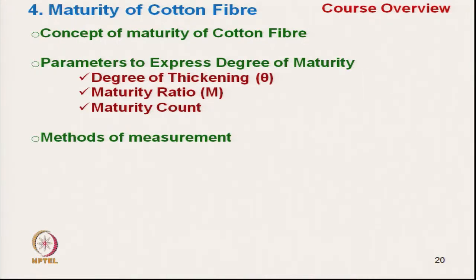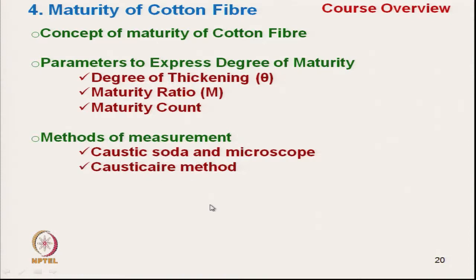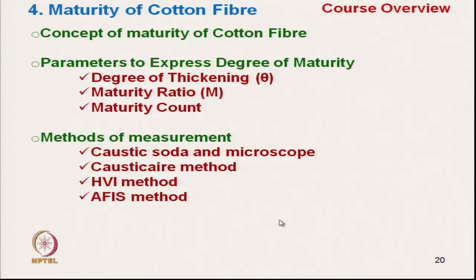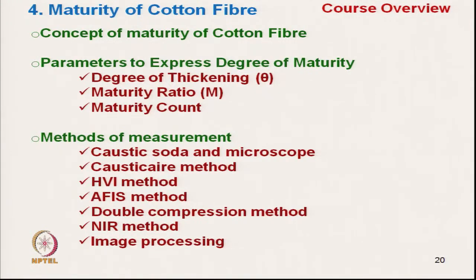Various methods of measurement of maturity will be discussed. These include the caustic soda and microscopic method, which is the most common method for cotton. Then the caustic air method — an indirect method. The high volume instrument method of measuring maturity uses the air flow method. The AFIS method of measurement of maturity, the double compression method, the near infrared method, and the image processing method of maturity.